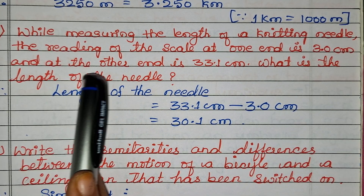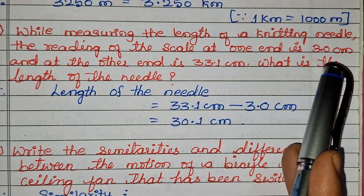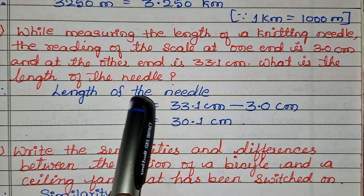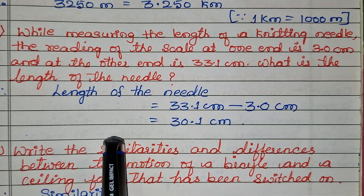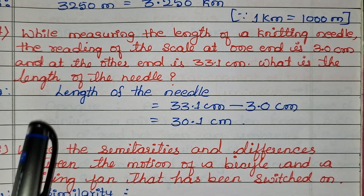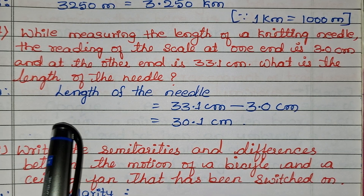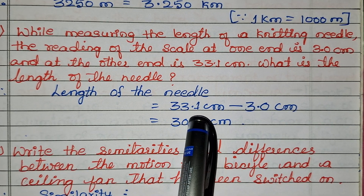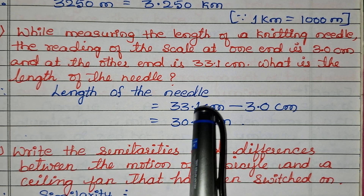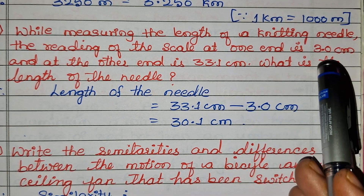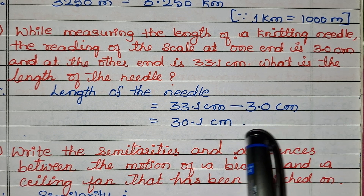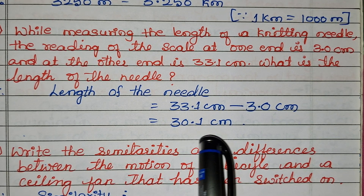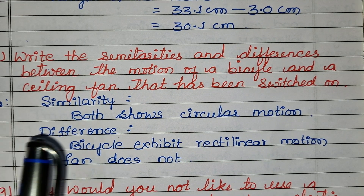While measuring the length of a knitting needle, the reading of the scale at one end is 3.0 centimeters and at the other end is 33.1 centimeters. The length of the needle equals 33.1 minus 3.0, which is 30.1 centimeters. So the length of the needle is 30.1 cm.